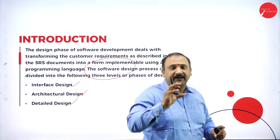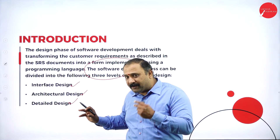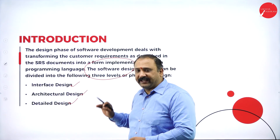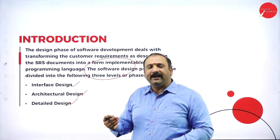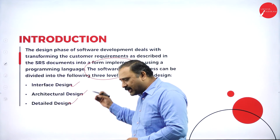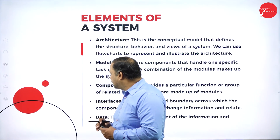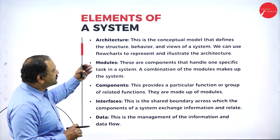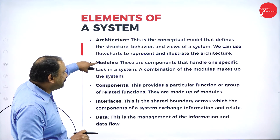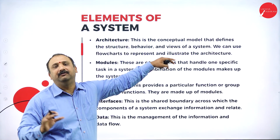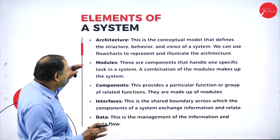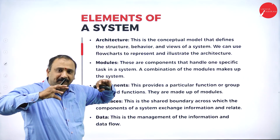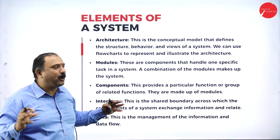This entire designing phase would be occupied by three parts: the interface, the architectural, and the detailed design. Followed by an architectural component — this is the conceptual model that defines the structure, behavior, and views of a system. This is going to give the overall picture about the software model.